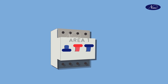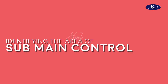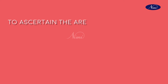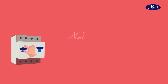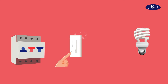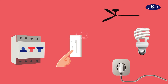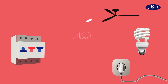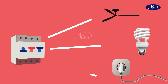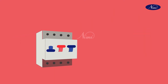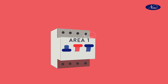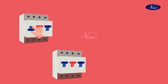If the area is not marked, then it has to be marked. To ascertain the area of sub-main control, switch off one of the sub-main switches and try to switch on the lights, fans and power points in that suspected area. If they do not work, we can conclude that the area covered by those fans, lights and power points is controlled by the sub-main switch which we switched off. Mark the area of control on the sub-main switch. Similarly, one after another switch off the sub-main switches and locate the area of control.